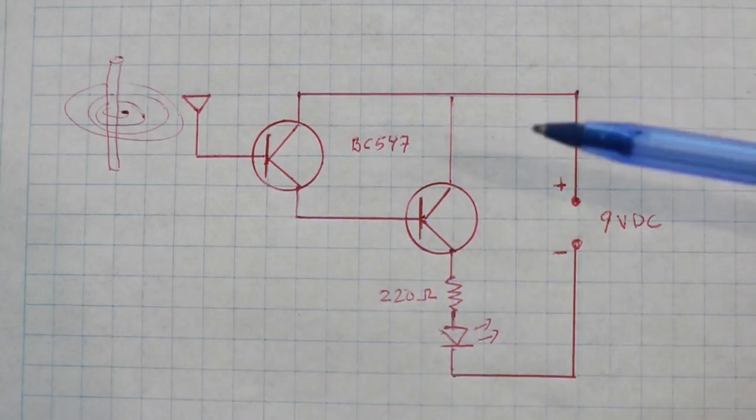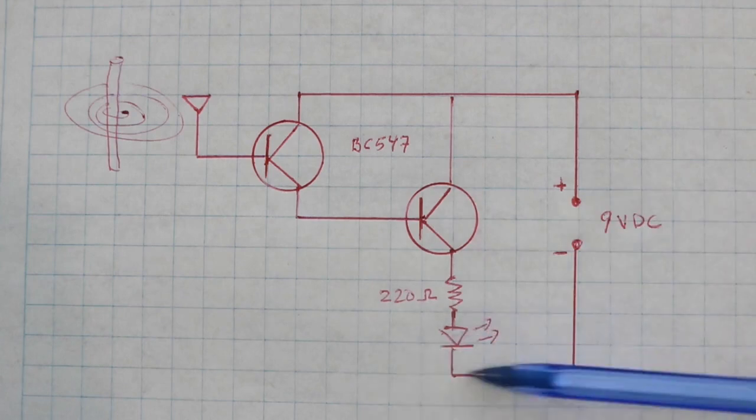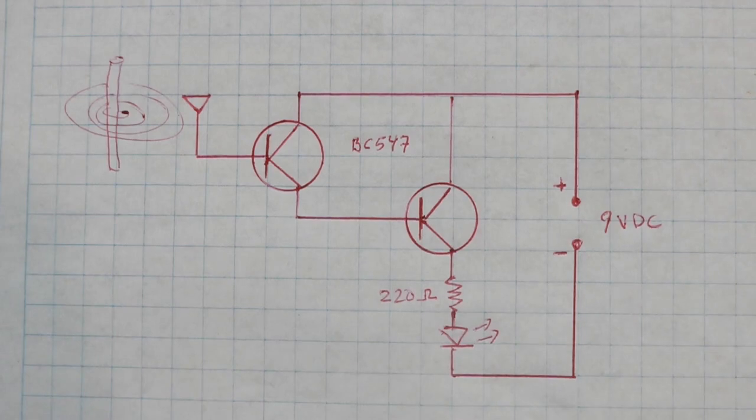Now the current is strong enough to light up the LED which turns on when the antenna is close to a current carrying wire.